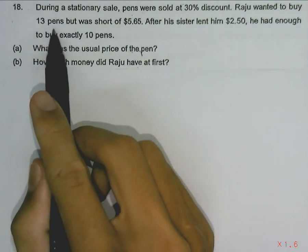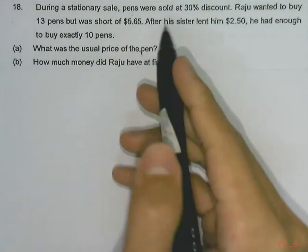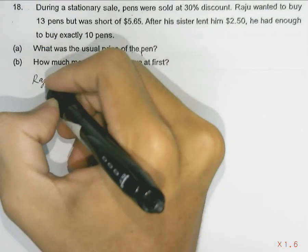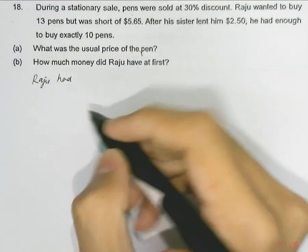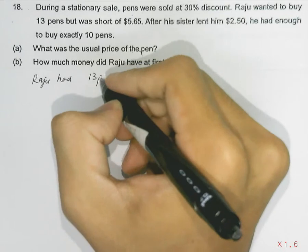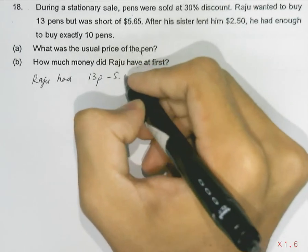Raju wanted to buy 13 pens but was short of $5.65, so the amount of money Raju had will be the same as the cost of 13 pens minus $5.65.